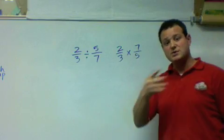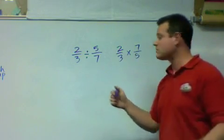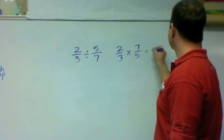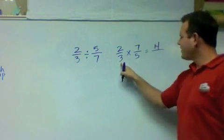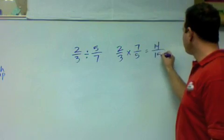Now it's just like multiplying fractions. Multiply straight across and reduce. 2 times 7, 14. 3 times 5, 15.